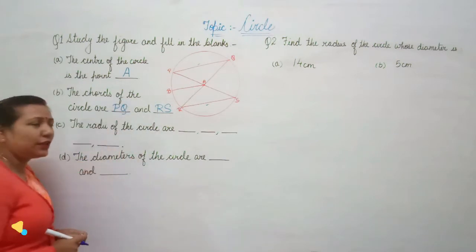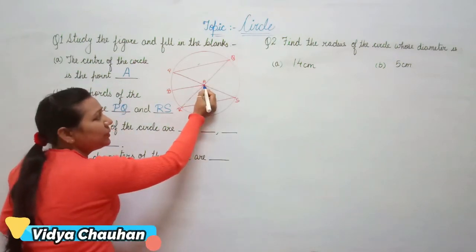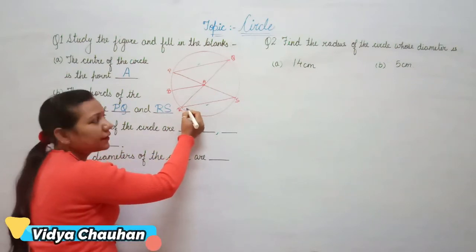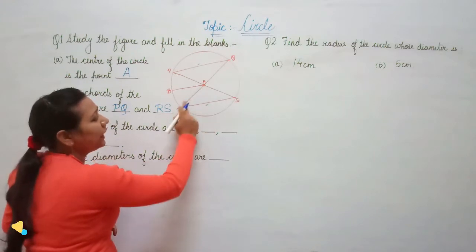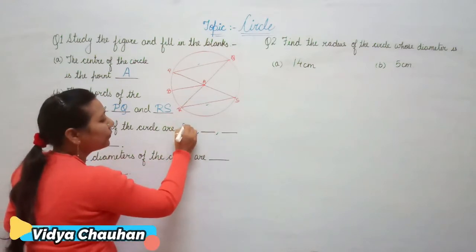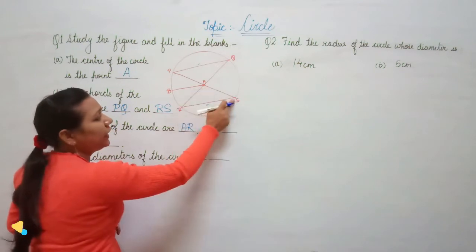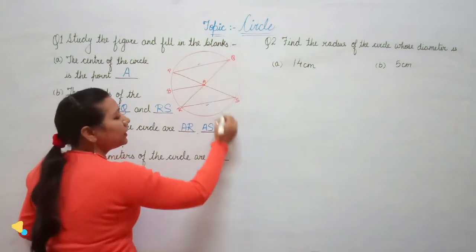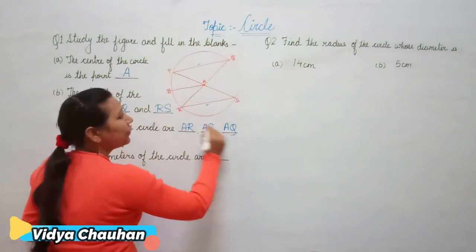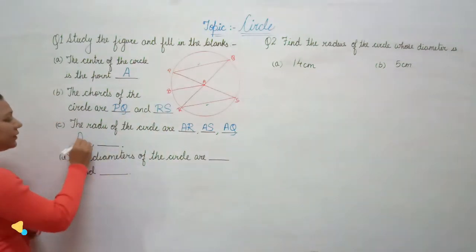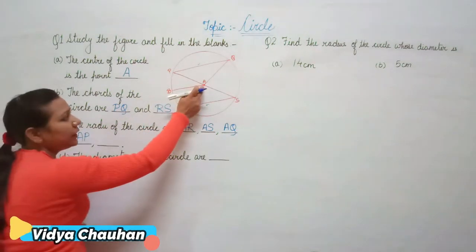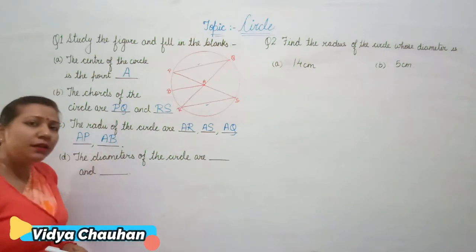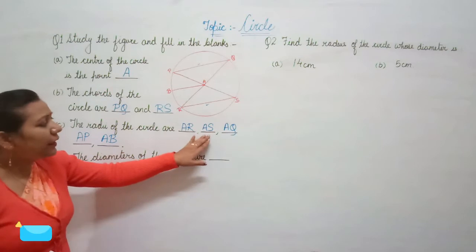The third part: the radii of the circle. There are five radii in this given circle. The radii are the line segments from the center to the extreme point on the circumference. So the five radii are: AR, AS, AQ, AP, and AB.